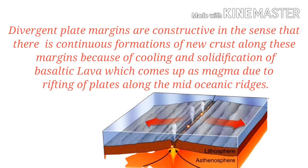Divergent plate margins are constructive in the sense that there is continuous formation of new crust along this margin, because of the cooling and solidification of basaltic lava which comes up as magma due to rifting of plates along the mid-oceanic regions.